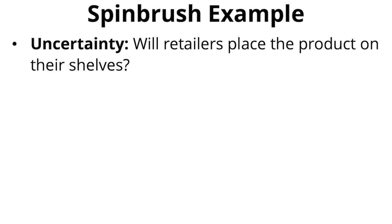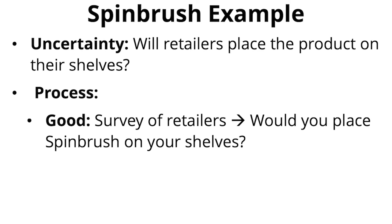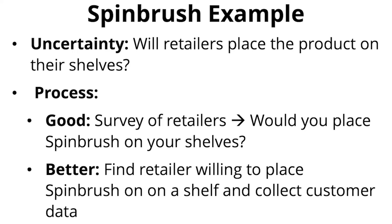For example, in the SpinBrush case, if the uncertainty is whether retailers will place this new toothbrush on their shelves, you could just do a survey of retailers, or ask two or three whether they would do it — or you could do what John Osher did, which is actually find a store, put the toothbrush there, and gather real data. The closer you can get in your process to actual behavior — customers buying and paying money — versus asking people how they would behave, the closer you get to action rather than opinion, and the more powerful your test is going to be.